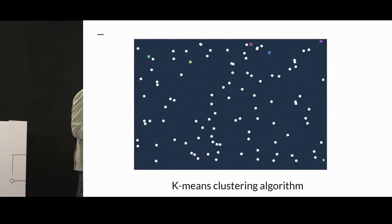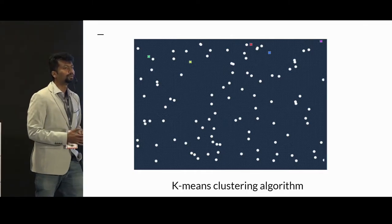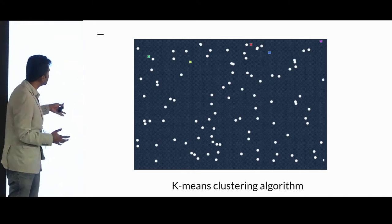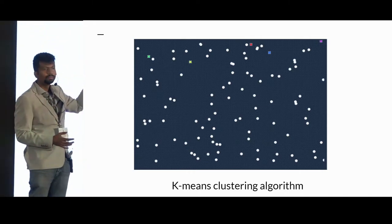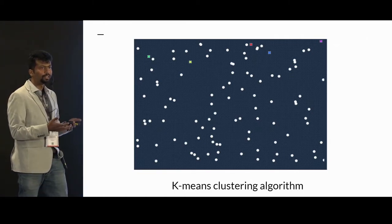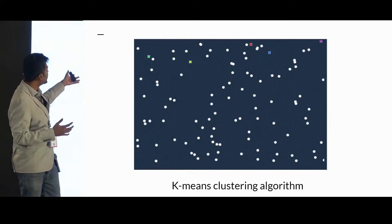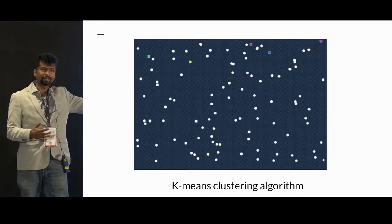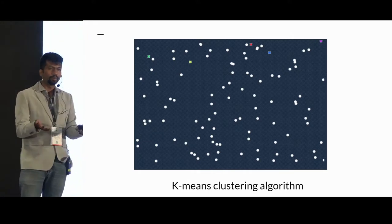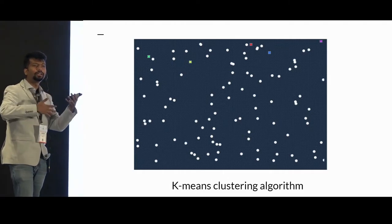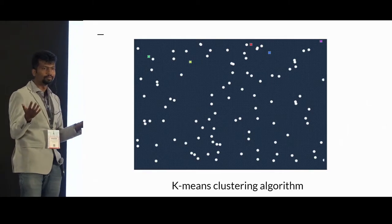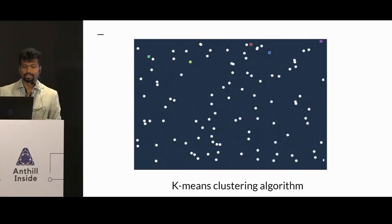I'm sure all of you know the K-means clustering algorithm. What K-means does is, given a bunch of points, it picks a few random points as centroids, clusters the rest of the points towards them by assigning based on distance from the randomly picked centroids, then recomputes the centroids, reassigns points to the nearest clusters, and so on until convergence.